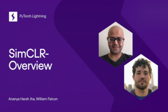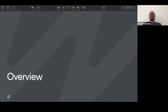Let's move on to the overview of SimCLR. The paper has four major components: the composition of image transformation, the nonlinear projection head, temperature and normalization of the output, and finally extremely large batch sizes and large negative samples. We'll go into the details of each one of them in the next slides.